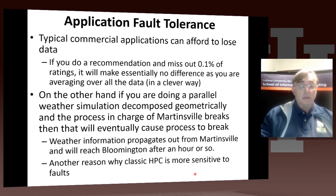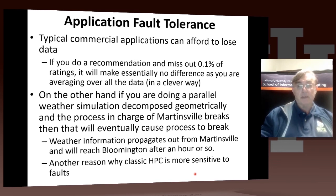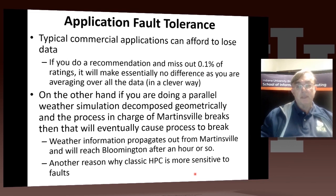Some commercial applications, like banking, absolutely cannot lose data — you'd be rather unhappy if your bank said 1% of people's money was lost due to a disk crash. But some other applications, such as Netflix recommender engines or web search, are quite fault tolerant. If you miss 0.1% of ratings or 0.1% of the web, it makes very little difference. Of course, if the missing 0.1% was the Wikipedia entry for a particular query you'd notice, but generally you would not miss the important part. Most Web 2.0 cloud applications are fault tolerant and do not need to worry too much.